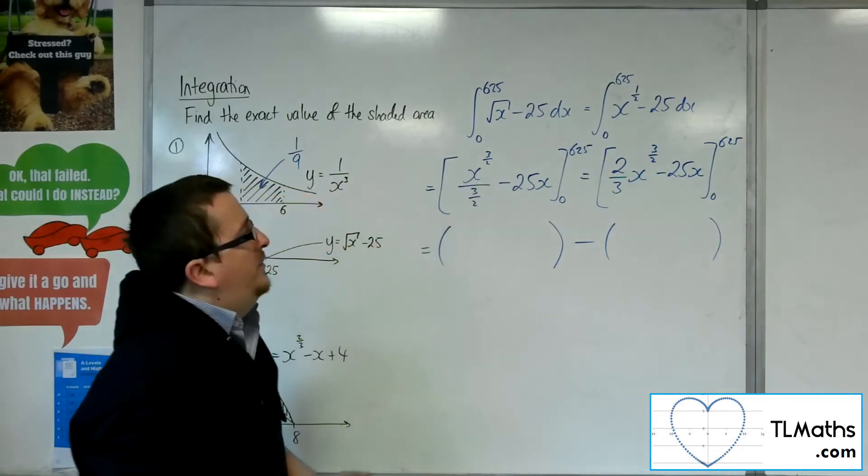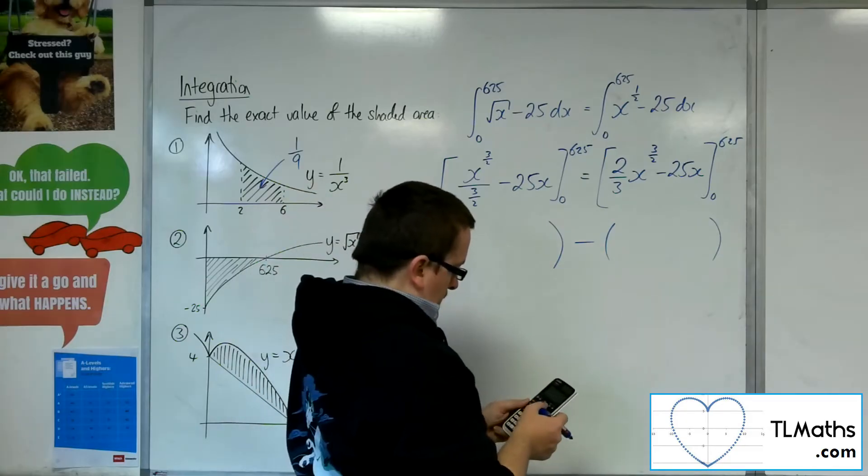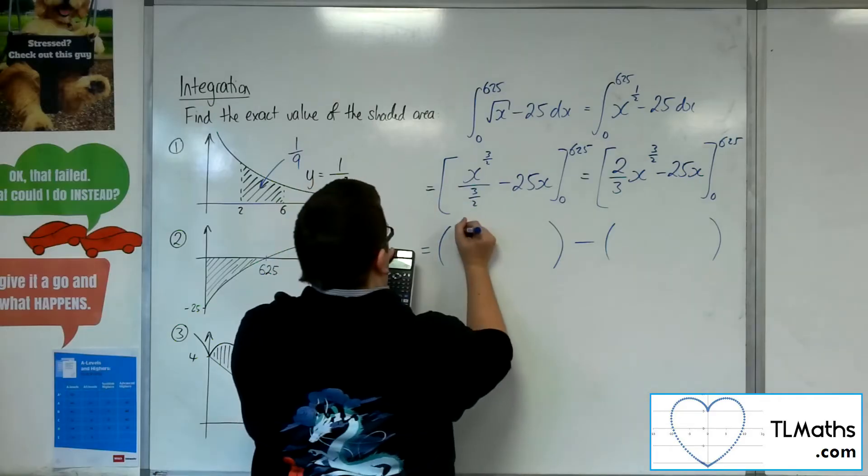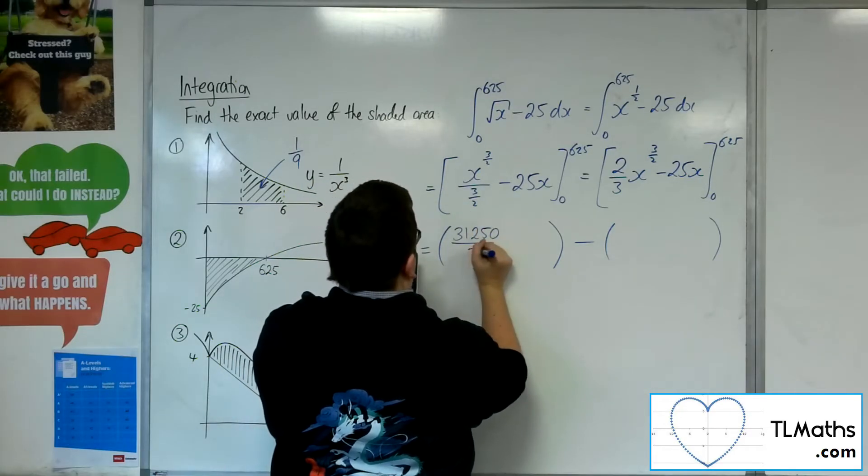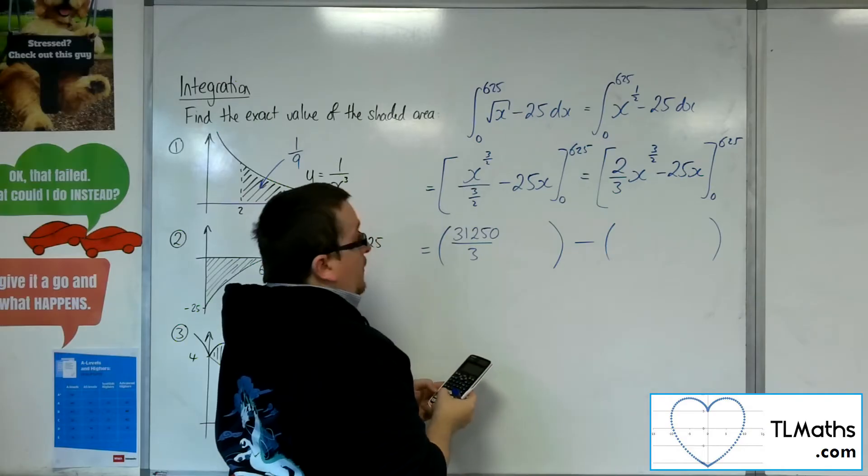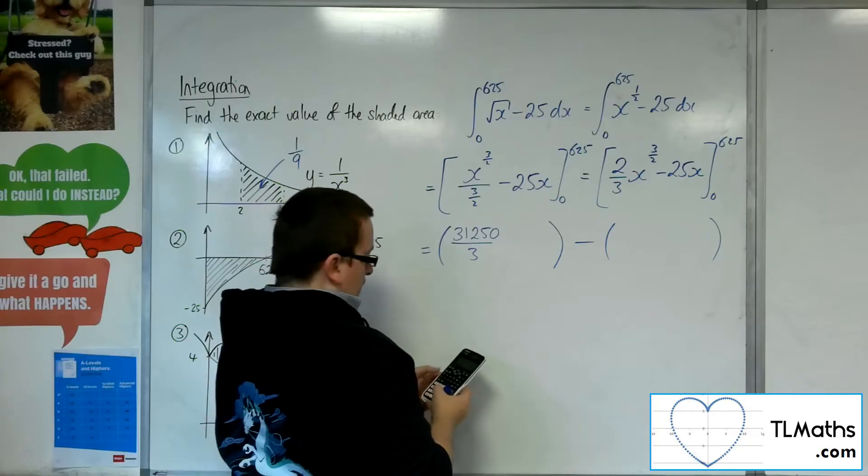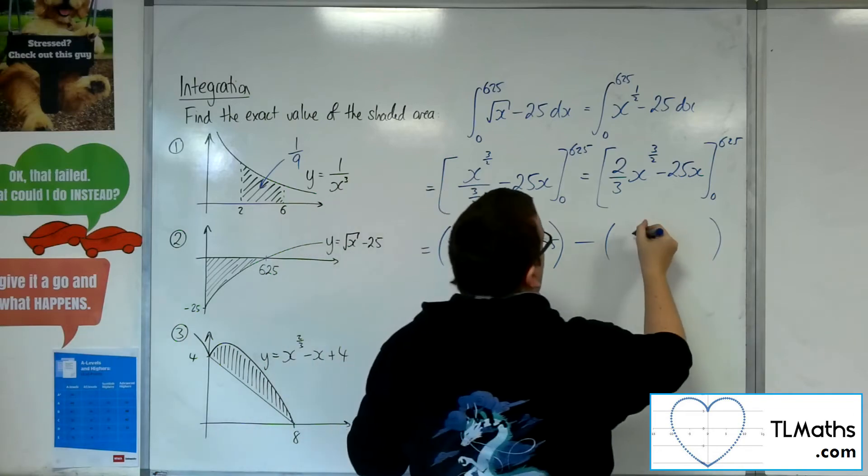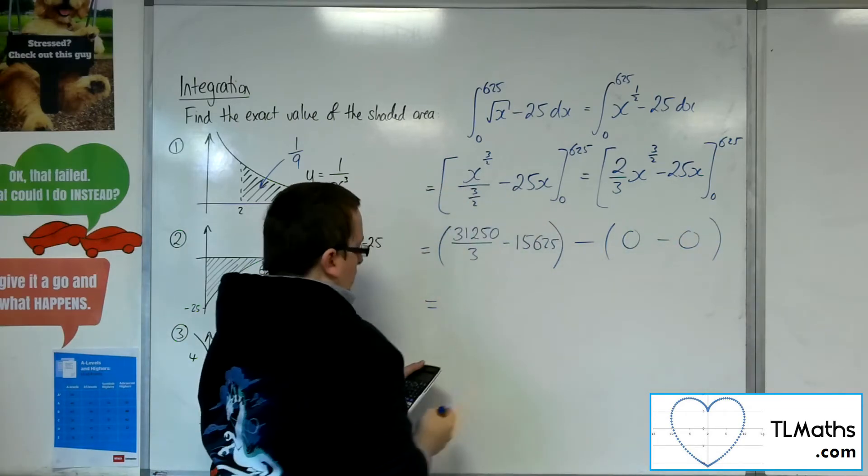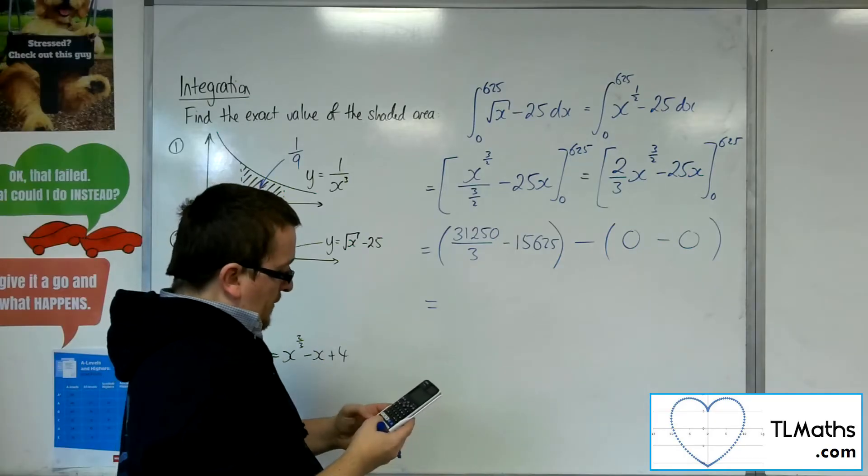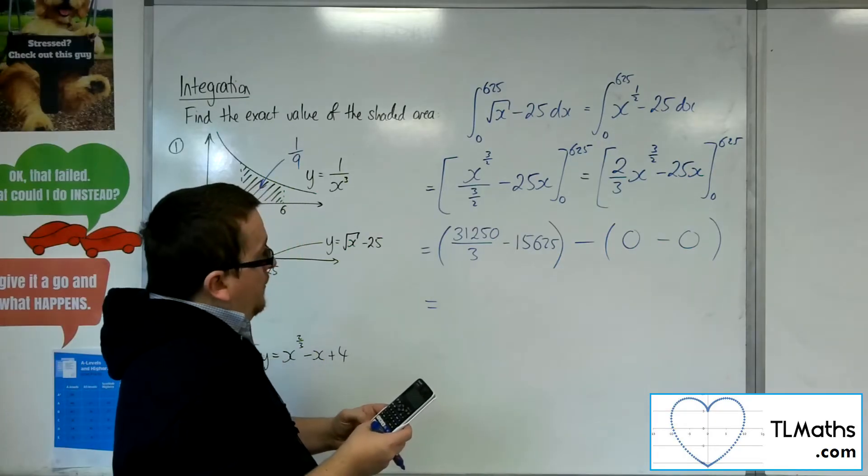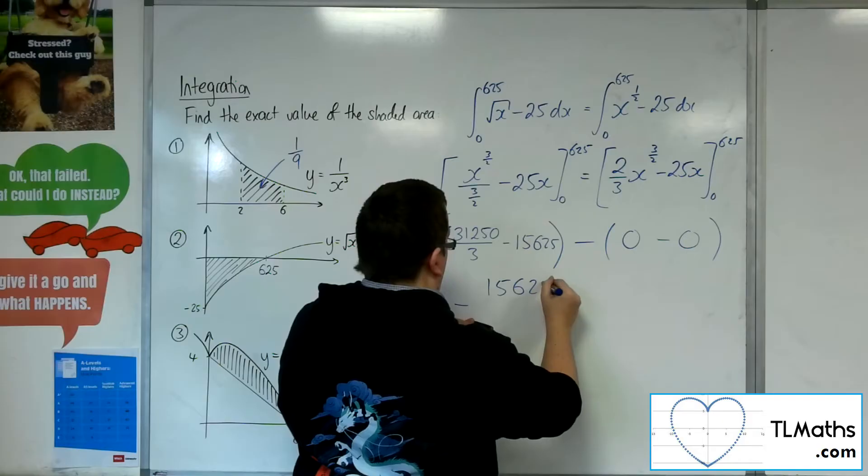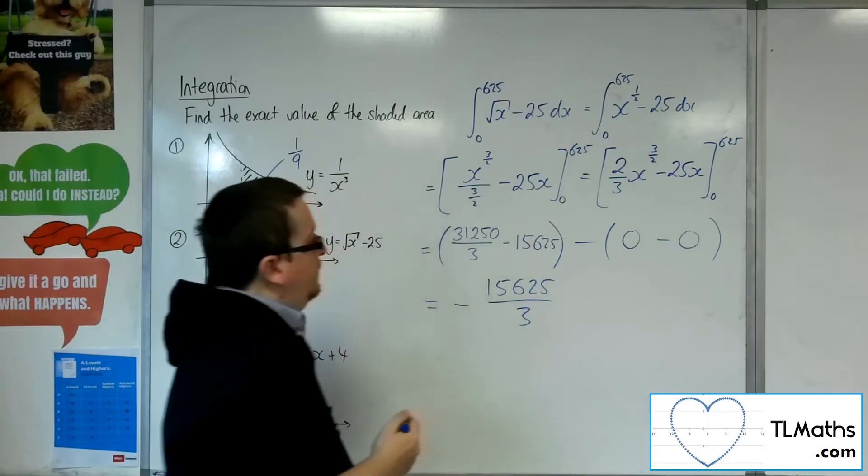So substituting in 625, so we've got 2 thirds times by 625 to the power of 3 halves. So that is 31,250 over 3, and 25 lots of 625, so take away 15,625. Substituting the 0, I'm going to get 0, take away 0. So I just need to work out 31,250 divided by 3, take away 15,625, which is minus 15,625 over 3.